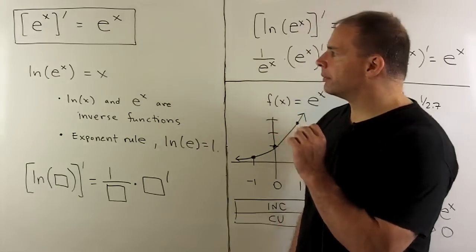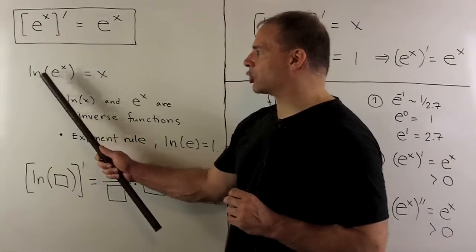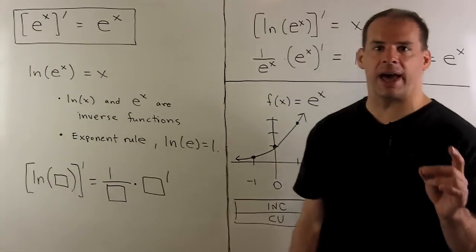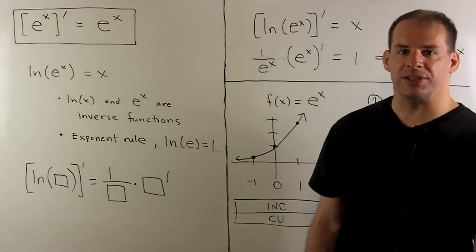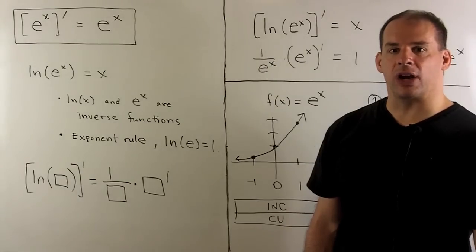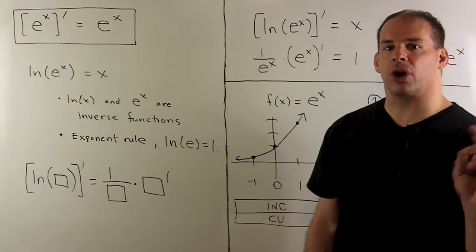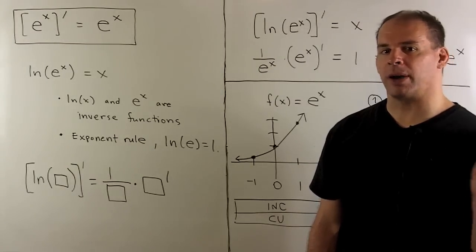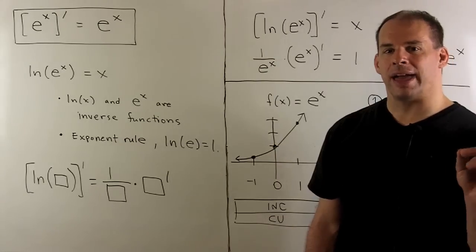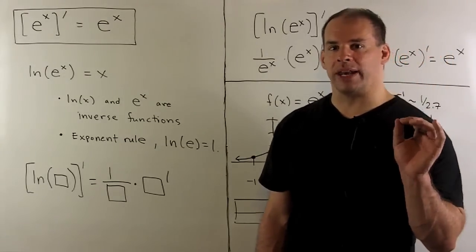Now, to show this, I'm going to start with the equation natural log of e to the x is equal to x. Two ways to see this. Either we note that natural log and exponential are inverse functions, so if I apply one to the other, then they cancel out and they leave us with an x.